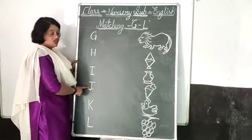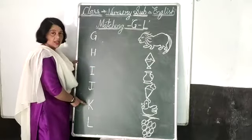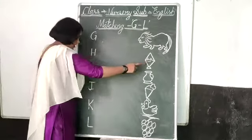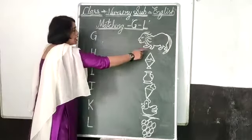This letter J, J for jug. This letter K, K for kite. This letter L, L for lion.